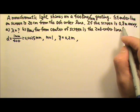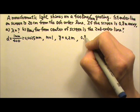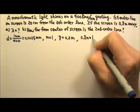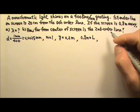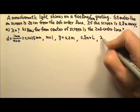If the screen is 0.8 meters away, that means 0.8 meters is the L, the distance to the screen. And we are looking for the wavelength.